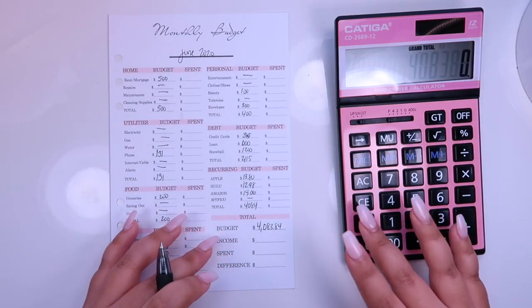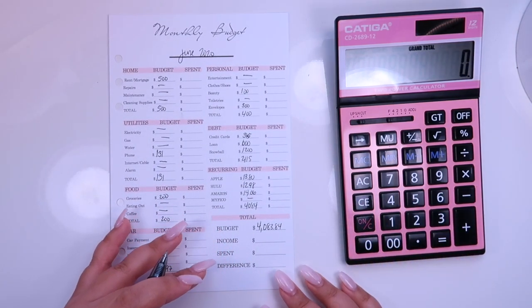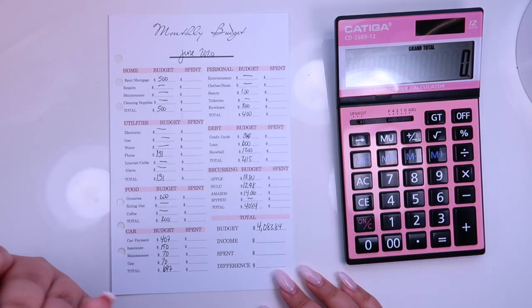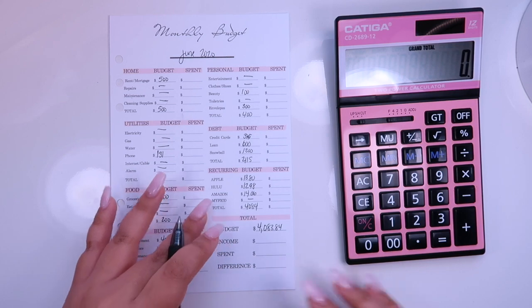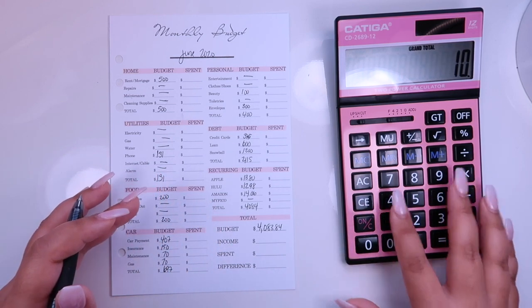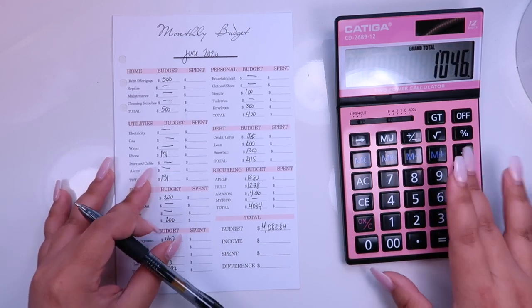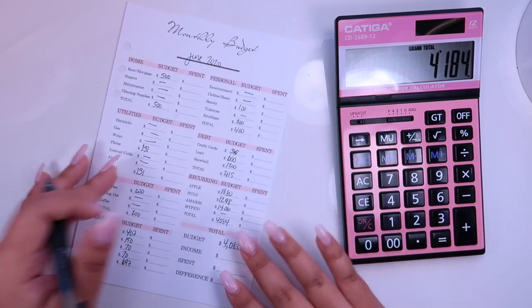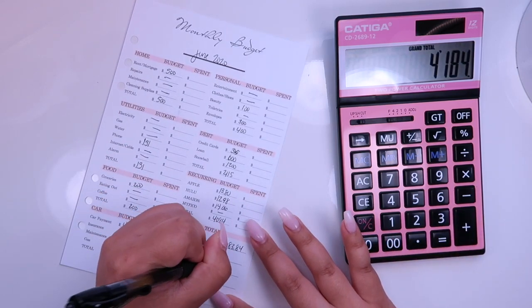So my income, I do get paid every Friday. And so my income, I calculate. Sometimes there's four Fridays in the month. Sometimes there's five. So for June, there was four. So I take home $1046 and times four, it's $4,184.